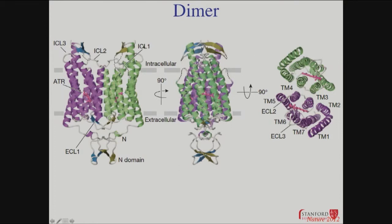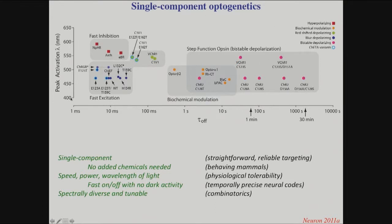These proteins are called opsins — seven transmembrane proteins, just like G-protein coupled receptors, except they form a dimer with a pore through which ions can flow in a light-regulated way. There is a huge diversity of these different opsins; they respond to all different colors of light and have kinetic properties operating from the millisecond scale to 30 minutes, so you can pick the one you want. The neat thing is it's just a single gene that controls both light sensation and ion flow, so it's very easy to deliver — you don't need to add chemicals.